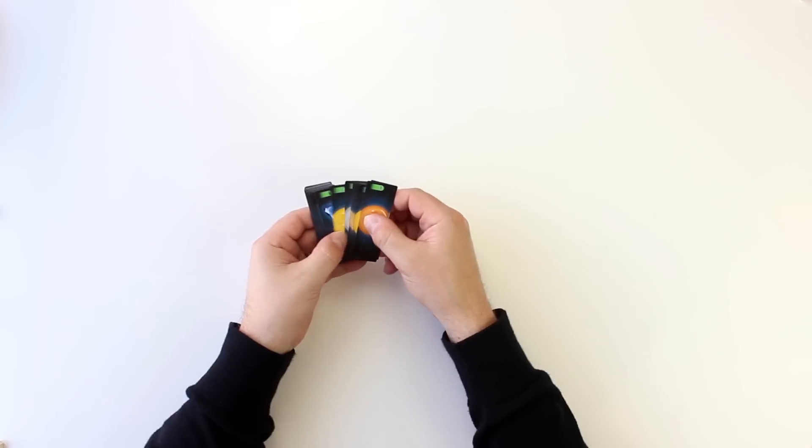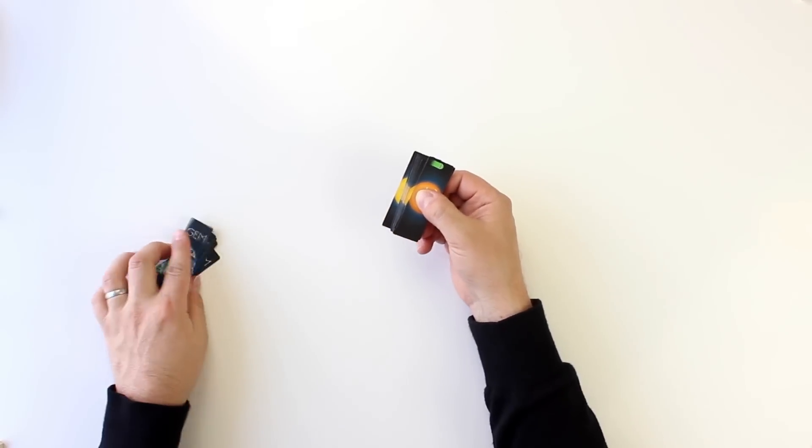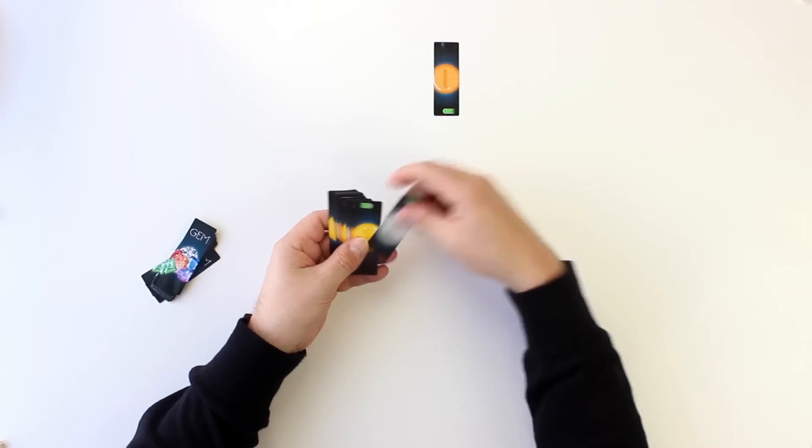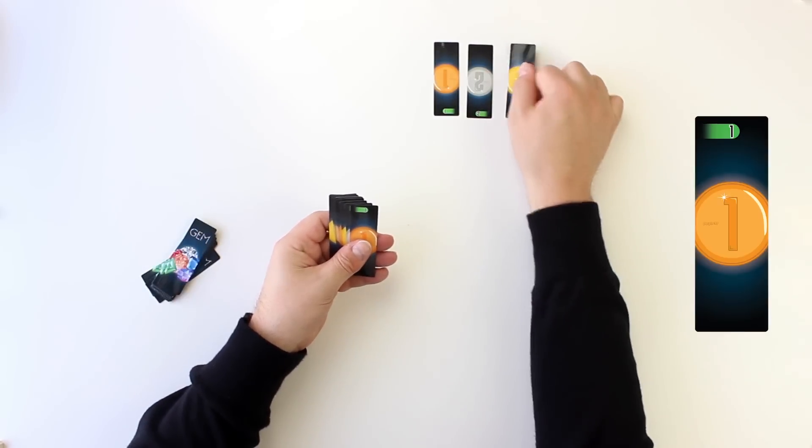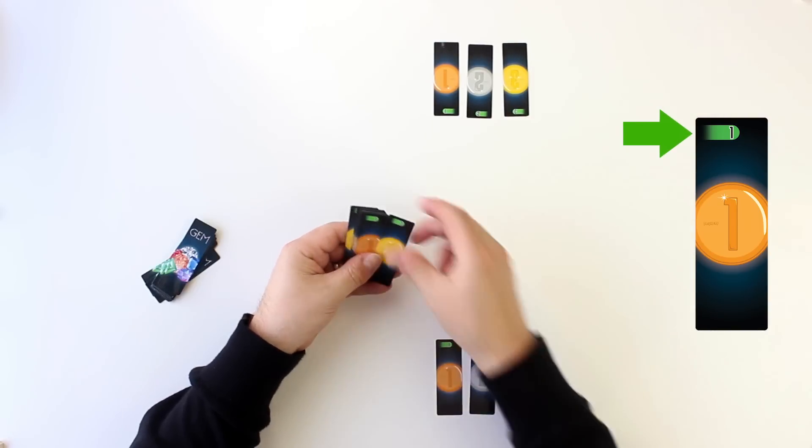Separate the money cards from the gem cards. Each player takes a 1, 2, and 3 coin card and places them in his playing area, coin side up, with the invested green banner side up.